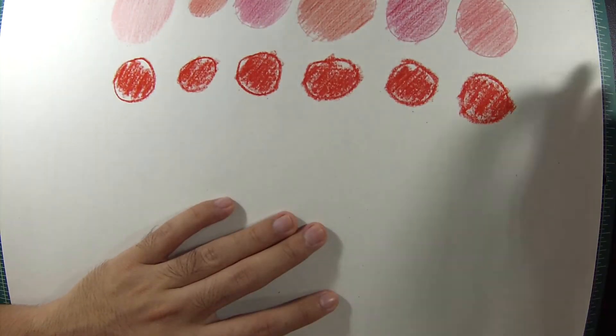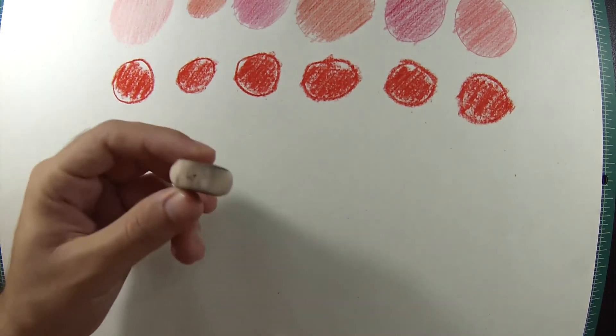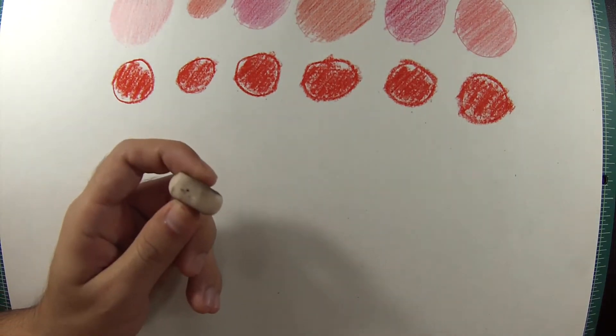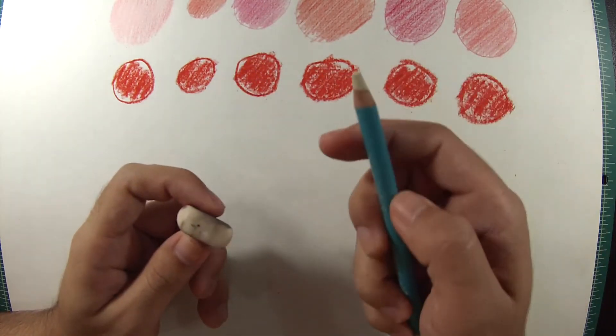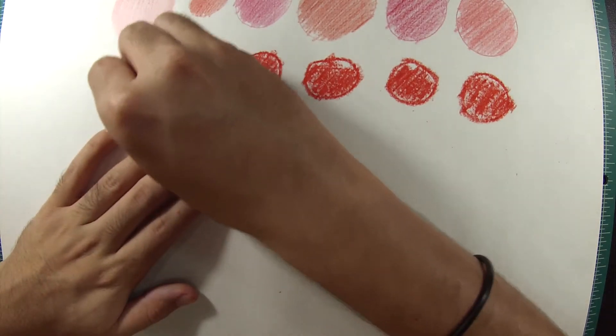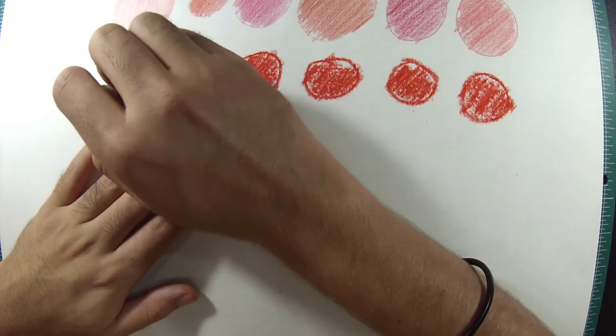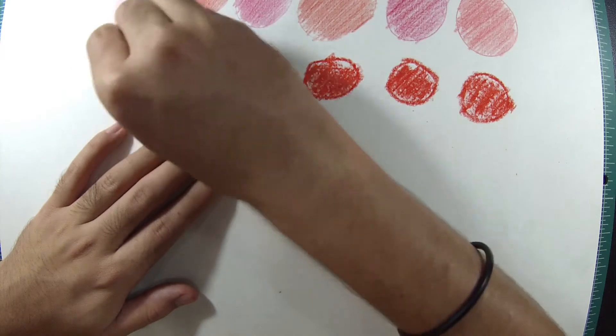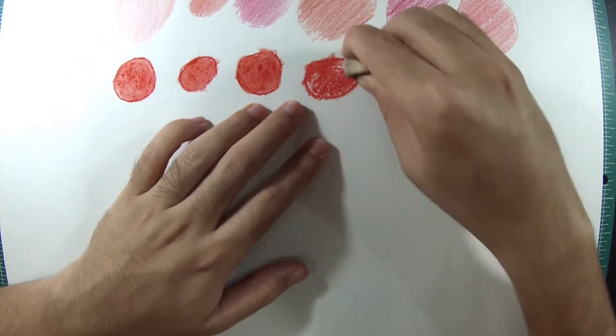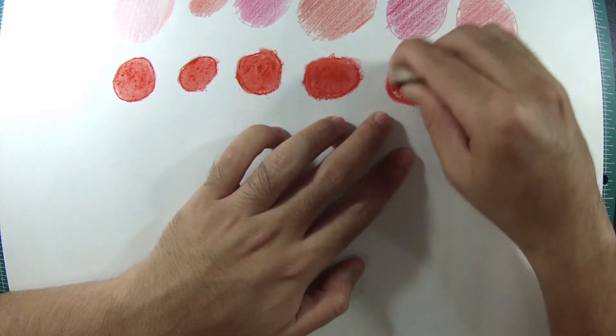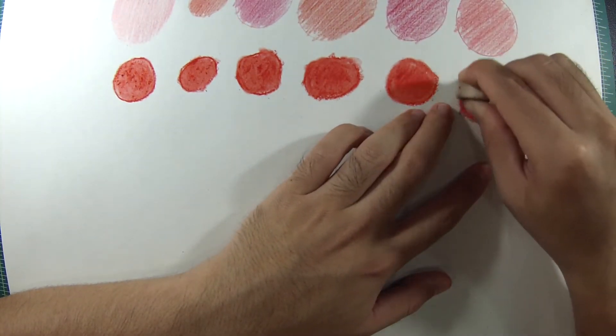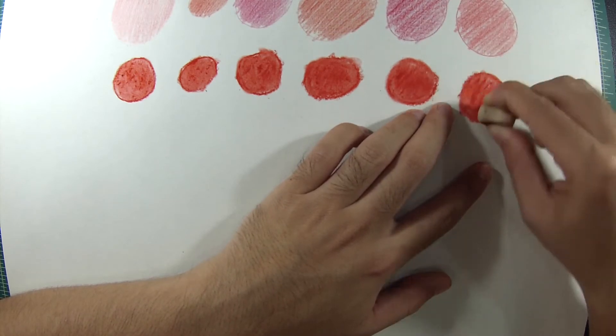So now that that's done, I'm going to blend it with just my eraser. As you can see I'm just using my simple old eraser. I also have a pencil eraser but that's for my detailing. Don't mind the circles, I'm just doing it for the video.